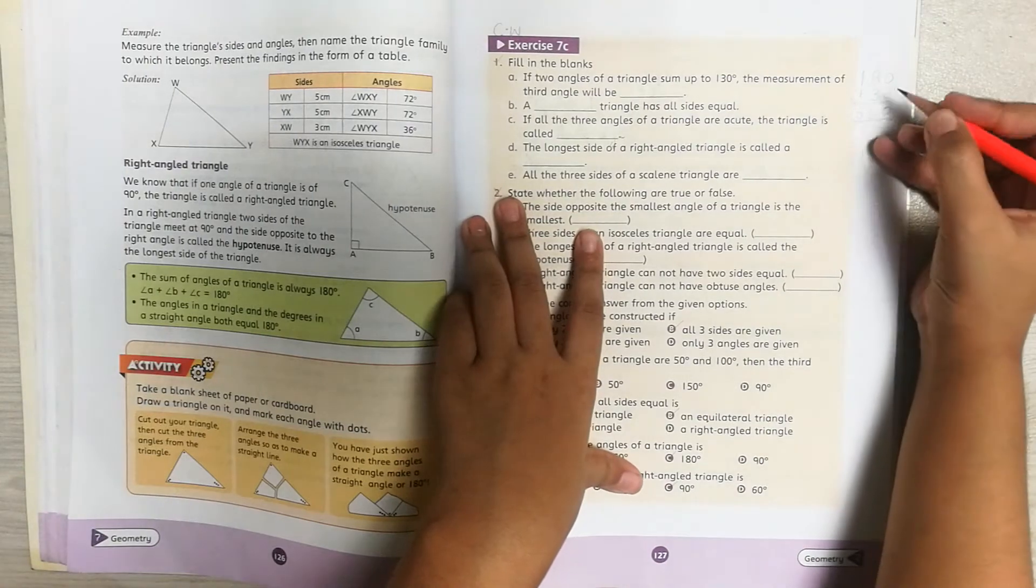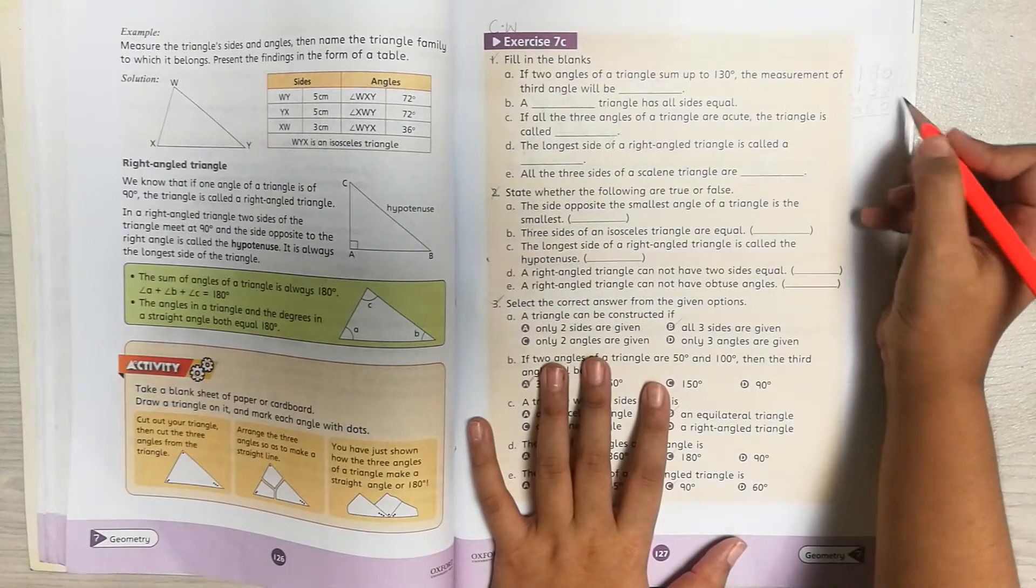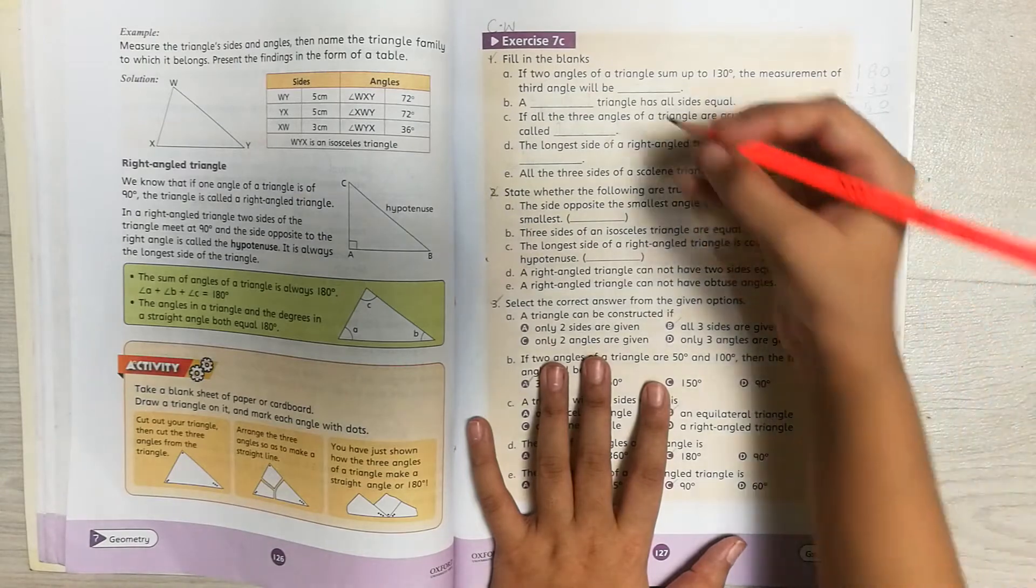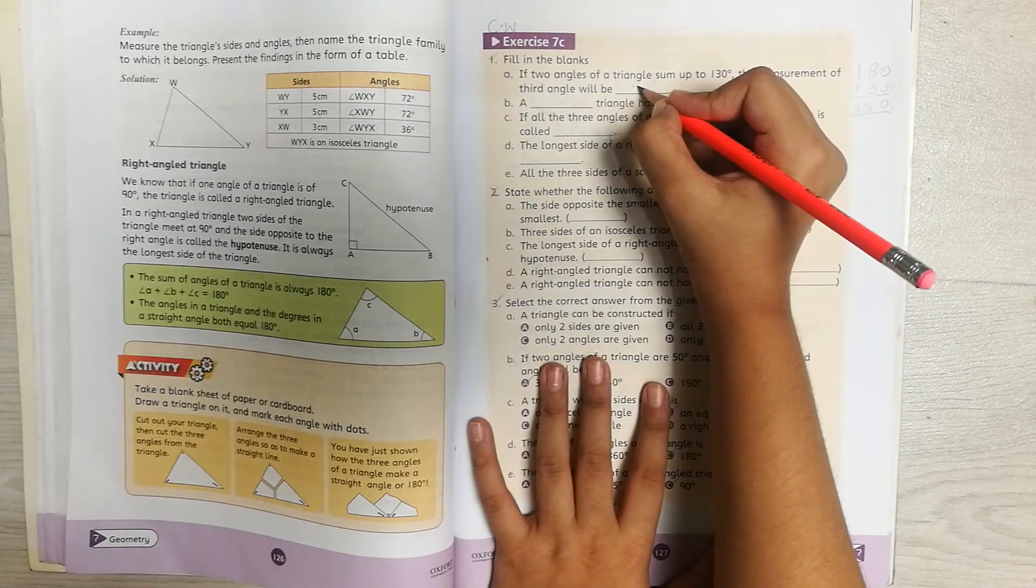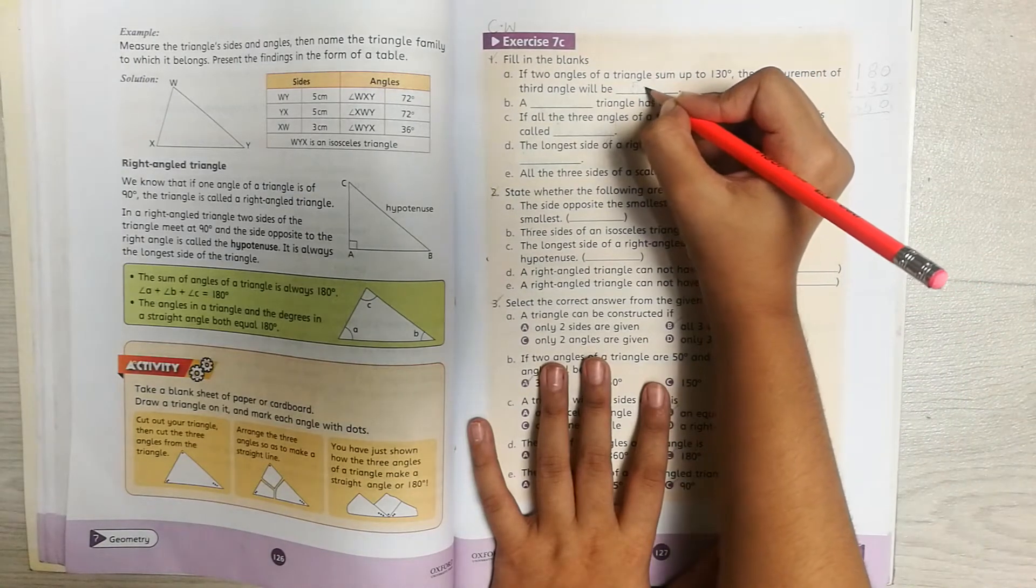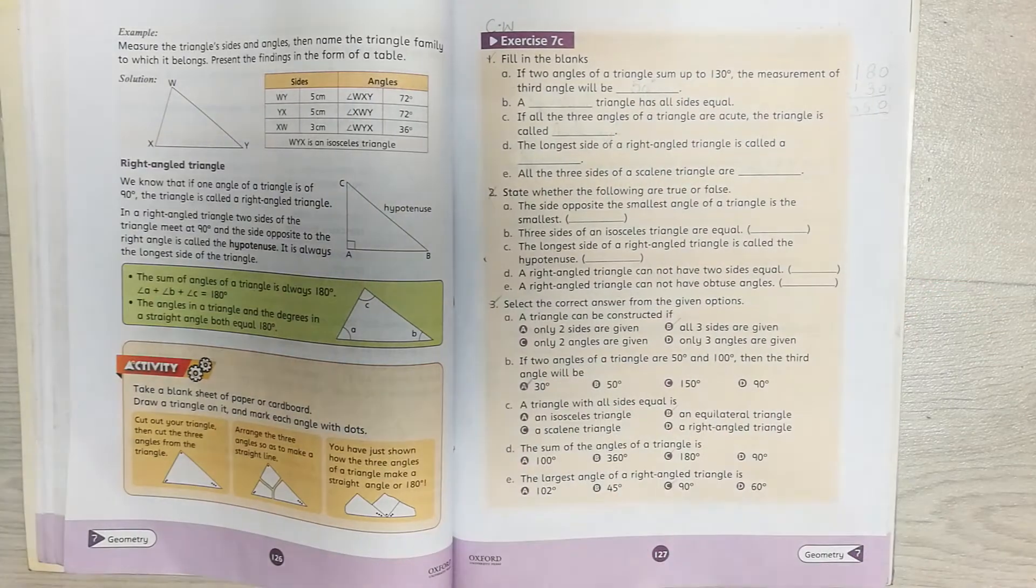So 50 is our answer, not this one because 0 doesn't count. 50 is our answer. We write 50 right here. Perfect.